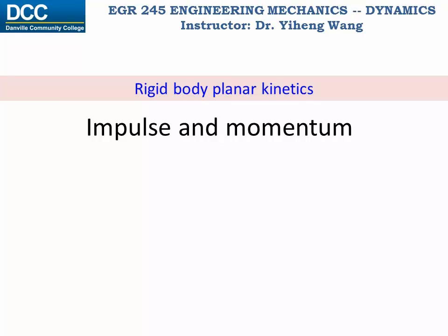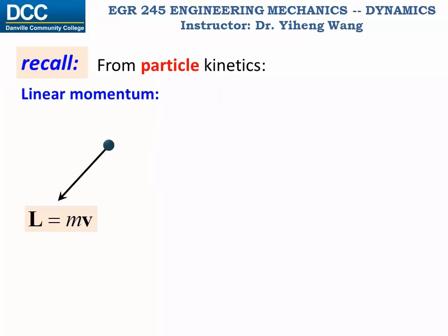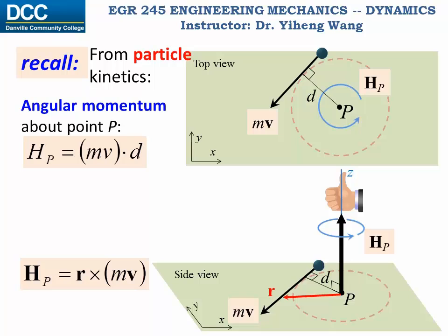Similar to work and energy, for rigid body planar kinetics we can also apply the same principle of impulse and momentum, as well as the conservation of momentum that we learned from particle kinetics. We simply need to redefine the momentum for a rigid body. From particle kinetics, the linear momentum L is simply mass m multiplied by linear velocity v, making it a vector. The angular momentum of a particle about a specified axis is the moment of its linear momentum about that axis. For 2D planar motion, angular momentum is calculated about a point as linear momentum multiplied by the moment arm to that point.